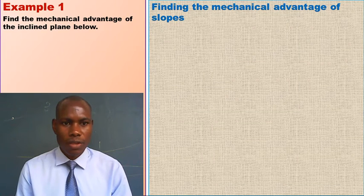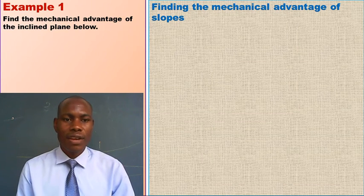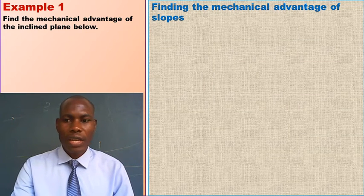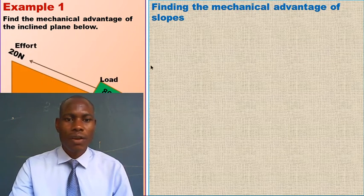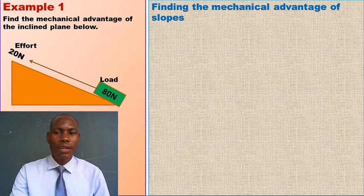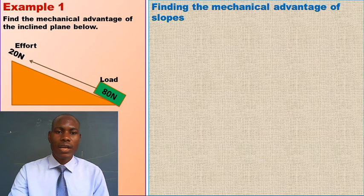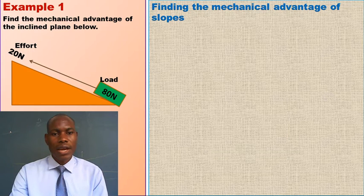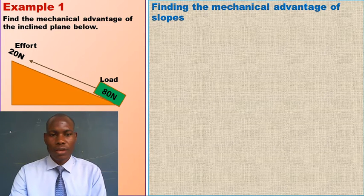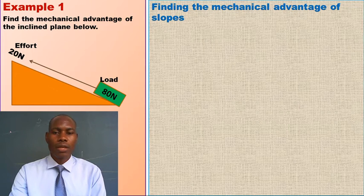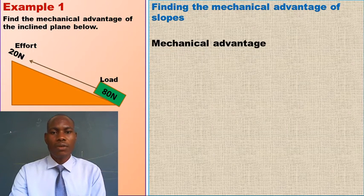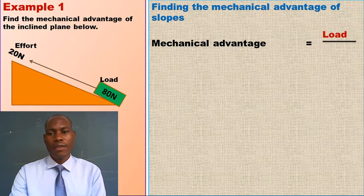Let us look at our first example. It says: find the mechanical advantage of the inclined plane below. We have that inclined plane and we want to find its mechanical advantage. You can discover that the effort is given as 20 newtons and the load is given as 80 newtons. When we are finding the mechanical advantage of an inclined plane, we shall still use the same formula, which says that mechanical advantage is equal to load divided by effort.